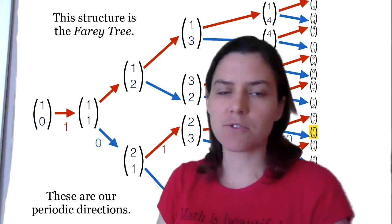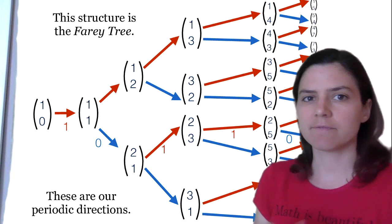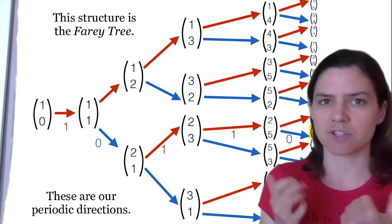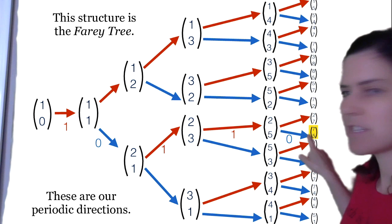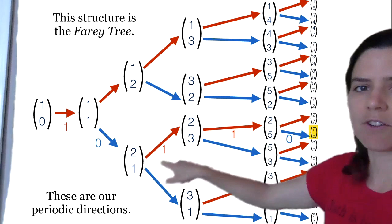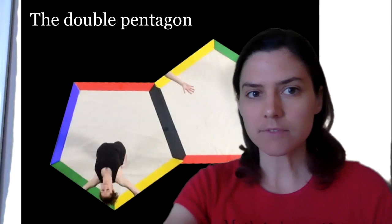The structure we get is a classical structure called the Farey tree. It puts a binary tree structure on the set of periodic directions on the square, or just fractions in lowest terms. Any fraction you want — you start at (1,0) and apply these transformations to get where you want to be.